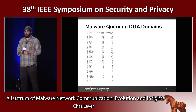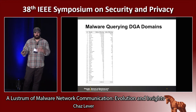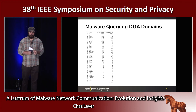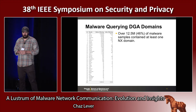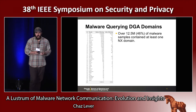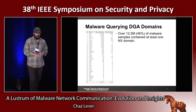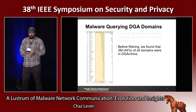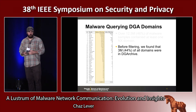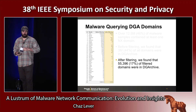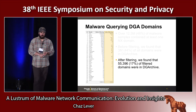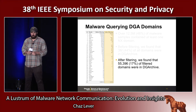Another thing we looked at was malware querying DGA domains. In the filtering step we removed NX domains because of this DGA effect. We wanted to see how many DGA domains we actually saw before and after filtering. About 12.5 million of the malware samples contained at least one NX domain. Using the DGA archive to look at approximately 50 million known DGA domains, we saw that before filtering, about 3 million of the almost 7 million effective second-level domains queried by malware were in DGA archives — almost half the domains in our data set. Even after filtering, about 17% of the remaining 327,000 domains were in the DGA archive as well. DGAs are very widely used across the malware in our sample, and that's a trend that seems to be growing.